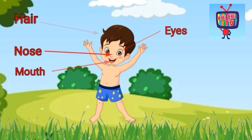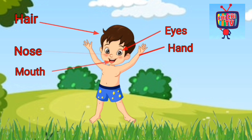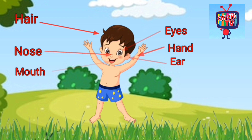E-Y-E-S. Eyes. Eyes means Aank. Hand. Hand means Haanth. E-A-R. Ear. Ear means Kaan.